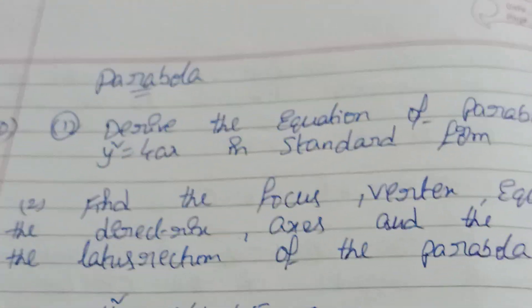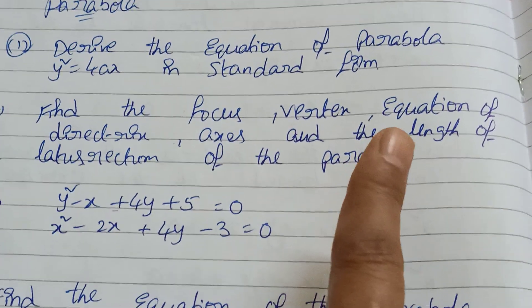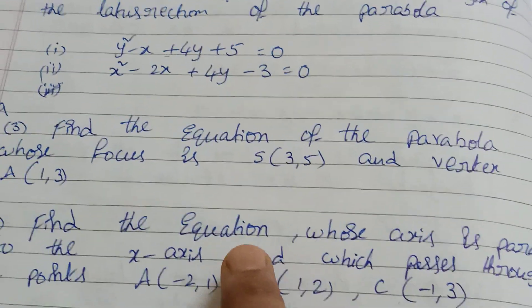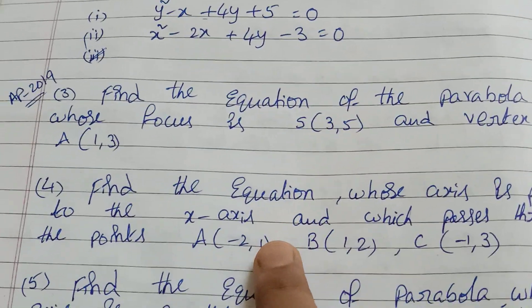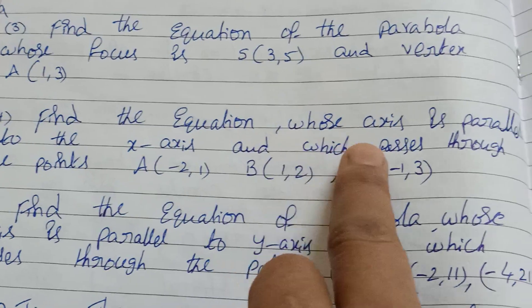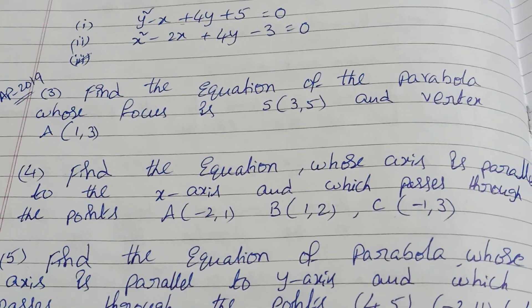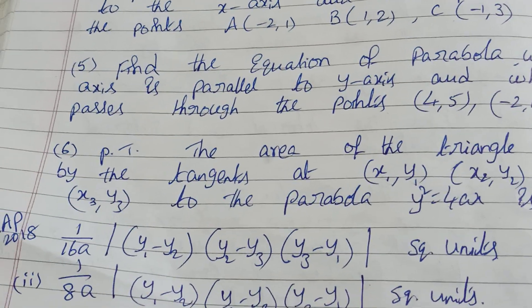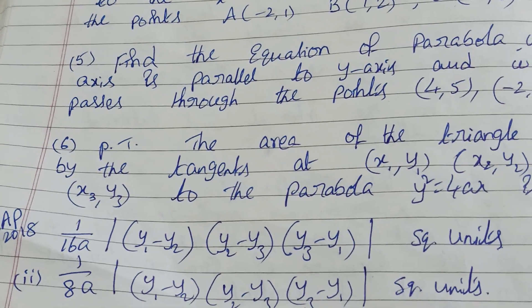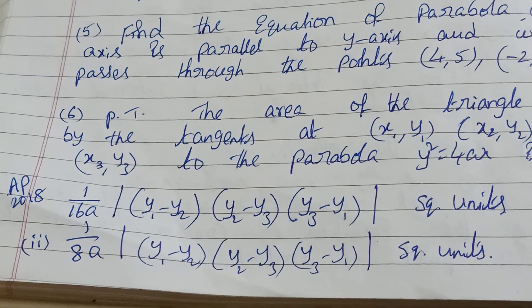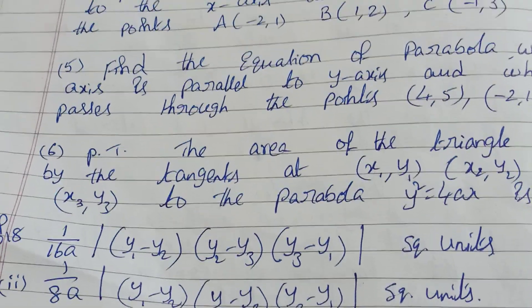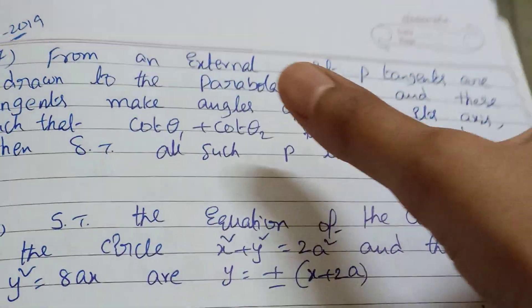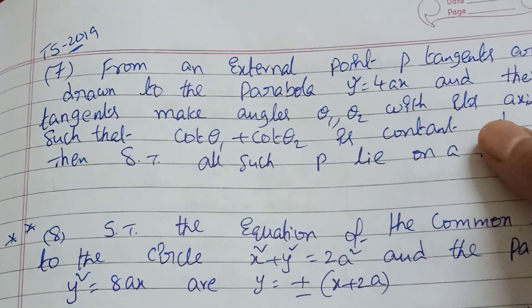Next question: parabola important way. Next vertex, equation of directrix, axis, length of latus rectum. Next focus, vertex is the equation of the x-axis. Next, x-axis which passes through the question. Which axis is parallel to the x-axis — this is parallel to the y-axis model. This is important. This is the area of the triangle — 1 by 8a, 1 by 16a into that, two points. If you want to check the parabola, check this playlist. Prepare the parabola.